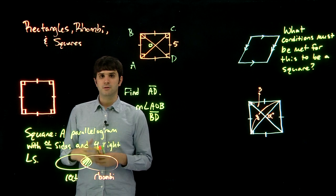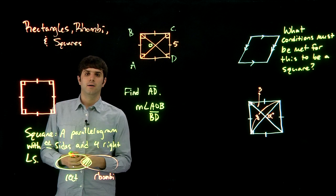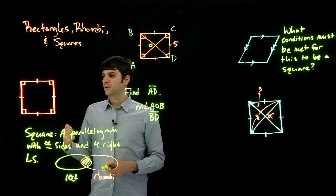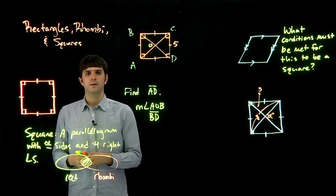So every property that we've talked about so far with rectangles and rhombi, you can combine those, and basically that will be our properties of the square as well. So everything about the diagonals bisecting each other, the diagonals are midpoint, diagonals meet in a right angle, all of those things apply to a square.